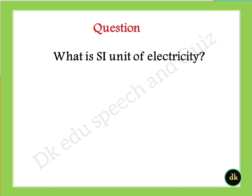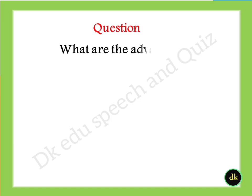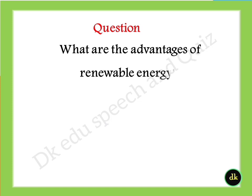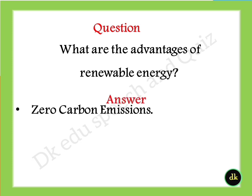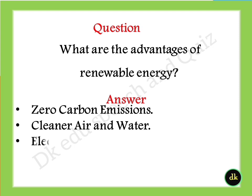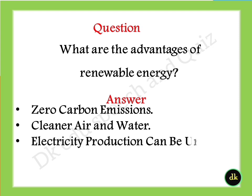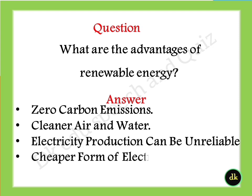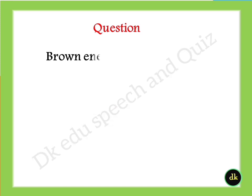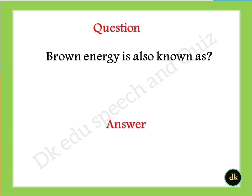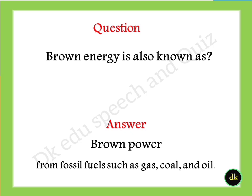What is a unit of electricity? Answer: watt. What are the advantages of renewable energy? Answer: zero carbon emissions, clean air and water. Note: electricity production can be unreliable, and renewable energy is a cheaper form of electricity but has a higher capital cost.